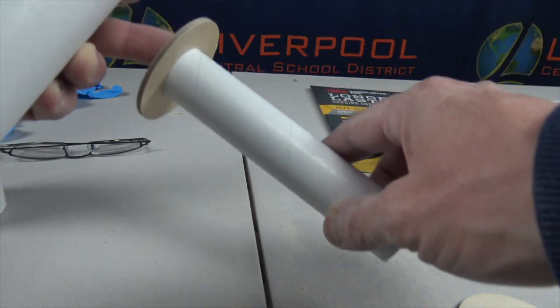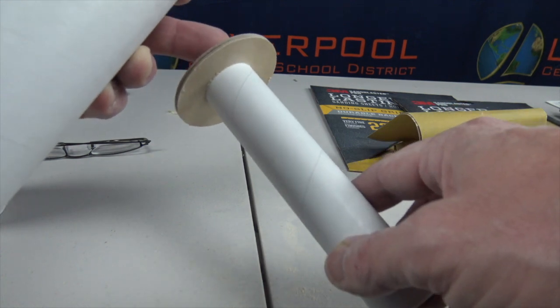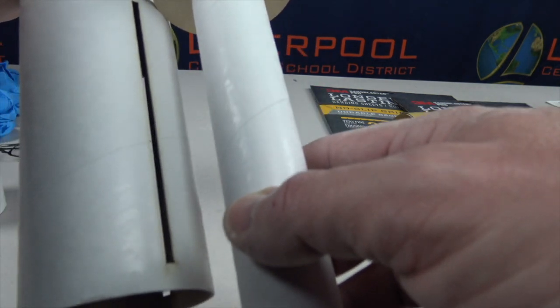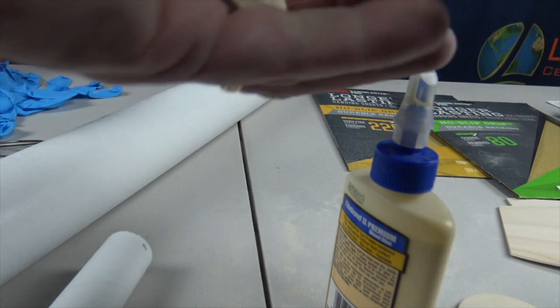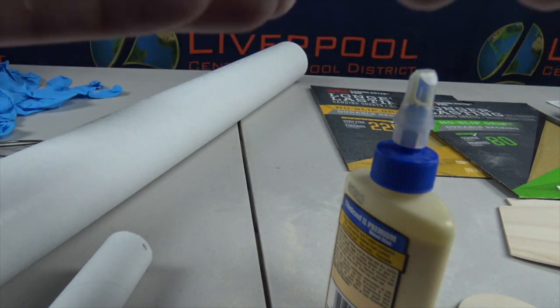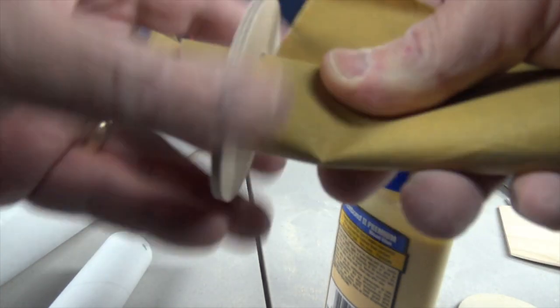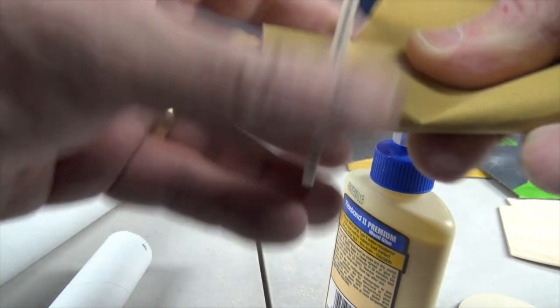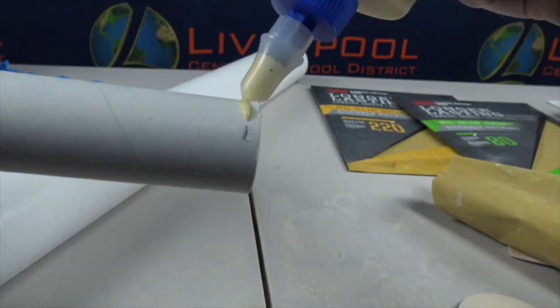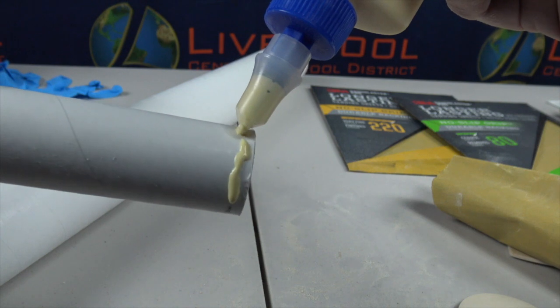So we need to have this high enough on our motor mount to get it above those slots. Sand the inside of this just a touch to rough it up. Once again, we don't want to reduce the surface area in here, being very gentle with the glue.